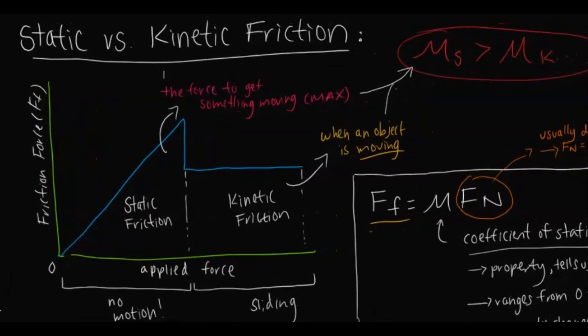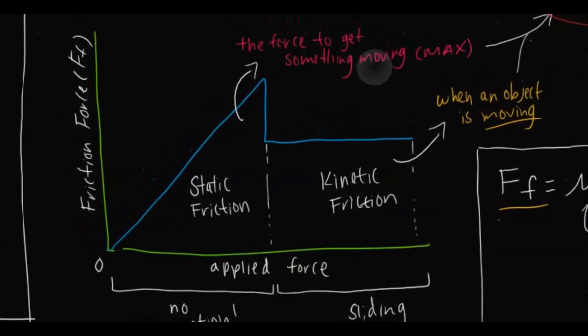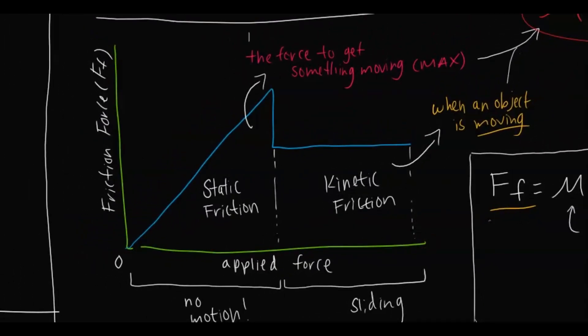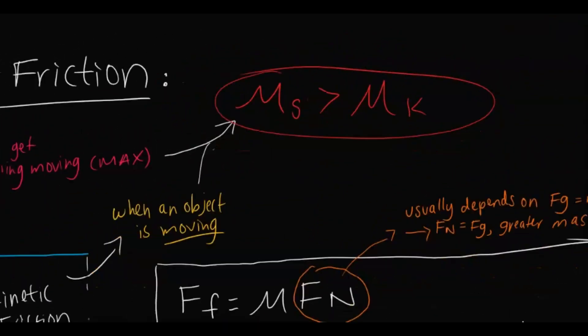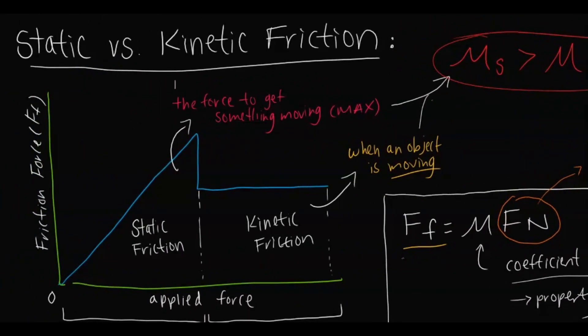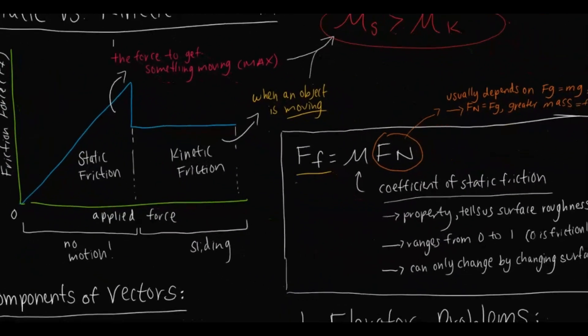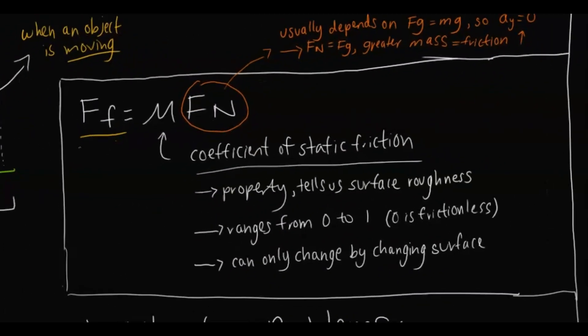Now let's talk about friction. The first thing is static versus kinetic friction. This chart shows that as force is applied over time, static friction is the first to appear and hits a maximum — that's the amount of force it takes to get something moving against friction. Once the object is moving, you have kinetic friction, which opposes motion while the object moves. Static friction will always be greater than kinetic friction because it takes more force to start motion than to maintain it.